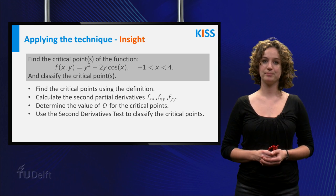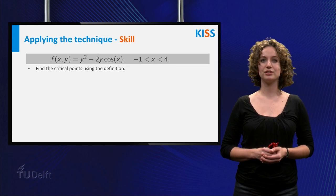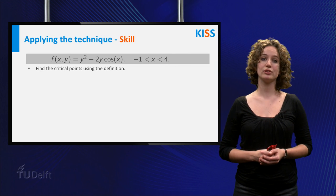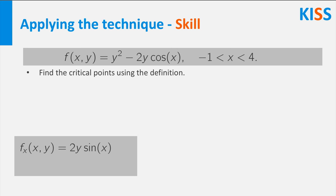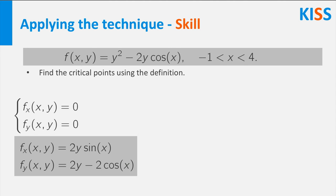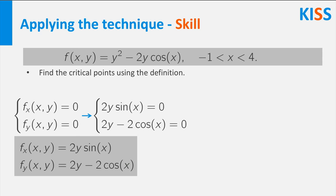The next step is Skill — use your skills to execute the plan. First, you want to find the critical points using the derivatives. The derivative of f with respect to x is equal to 2 times y times the sine of x. The derivative of f with respect to y is equal to 2 times y minus 2 times the cosine of x. Both derivatives are well defined in all points of their domains. Therefore, a critical point will be a point where both derivatives are equal to zero: 2y times sine of x equals zero, and 2y minus 2 times cosine of x equals zero.